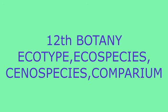The next term is Ecospecies. When one or more ecotypes are combined, it is called an Ecospecies. Within this, there is a possibility of interbreeding and interchanging of genes — exchange of genes can occur between ecospecies. It is equivalent to Species, which in classical taxonomy is the basic unit of classification.